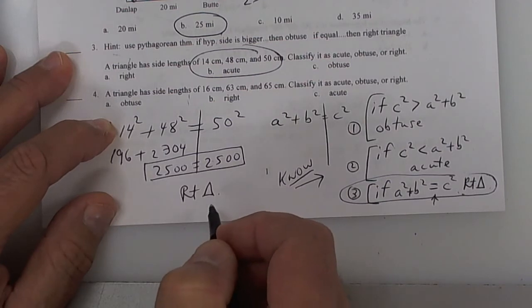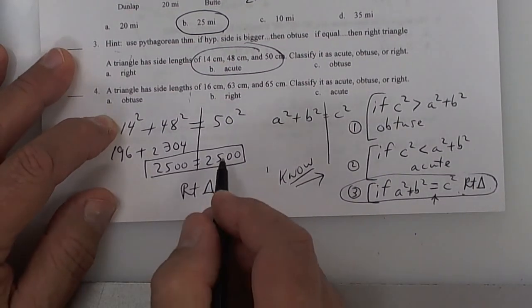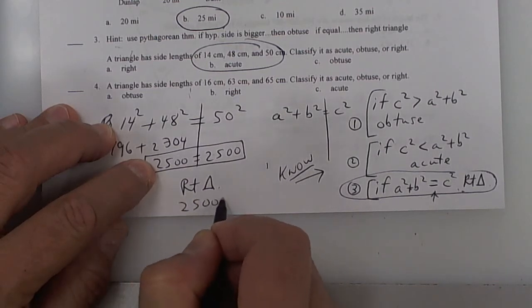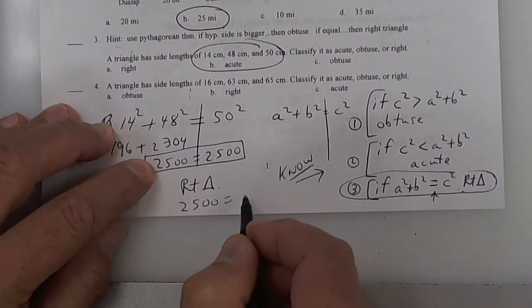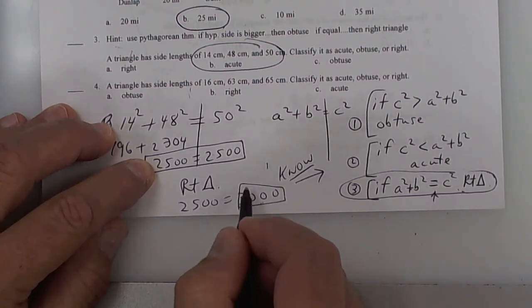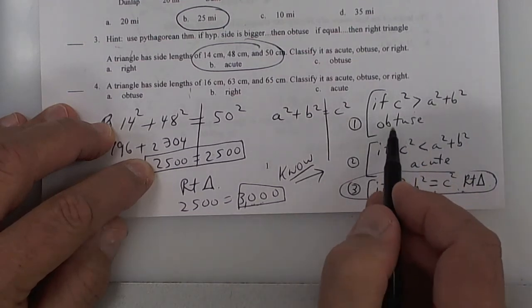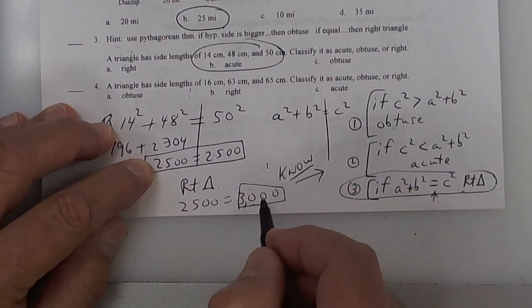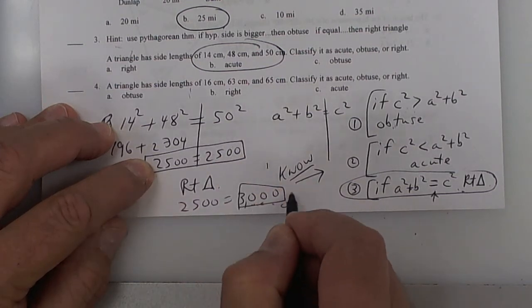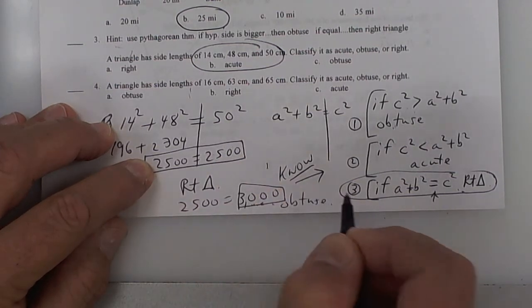Now, take your calculator. 14 squared is 196. 48 squared is 2304. Add up the 196. I get 2,500 on this side. On the other side, 5 times 5 is 25, so 50 squared is also 2,500. Now, look here at the choices. If they are equal to each other, right here, then it's a right triangle.